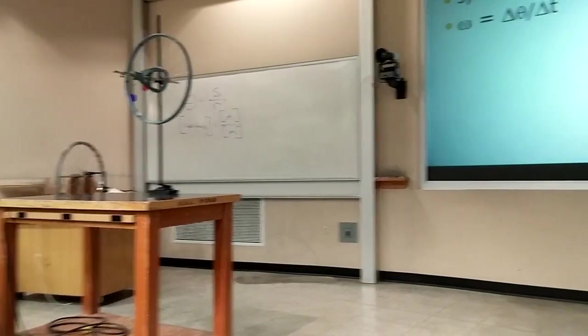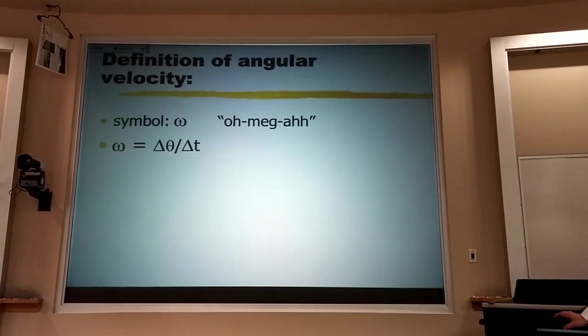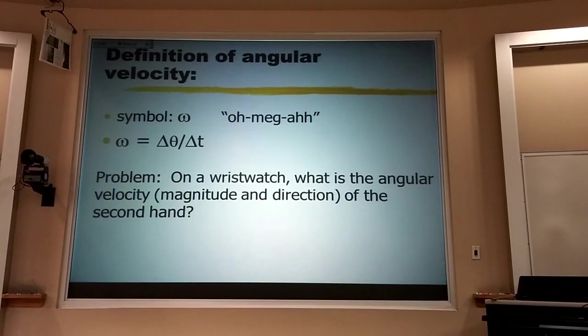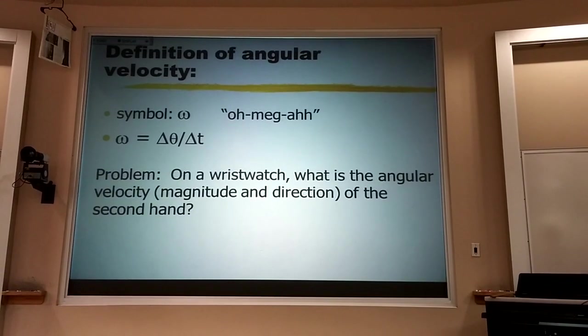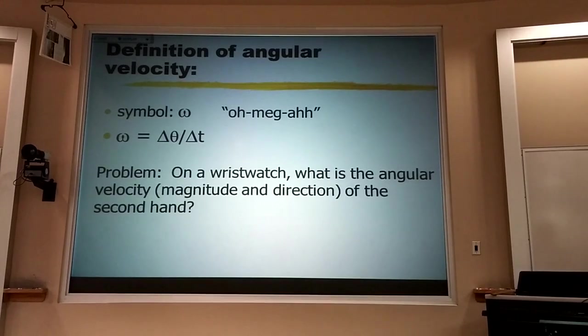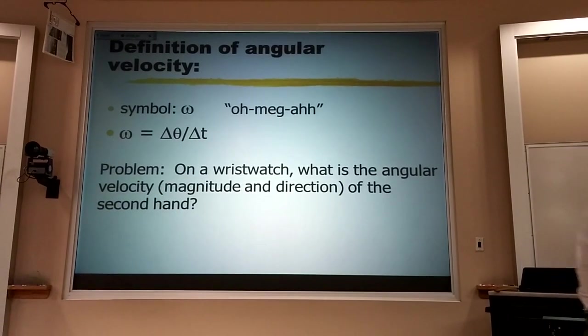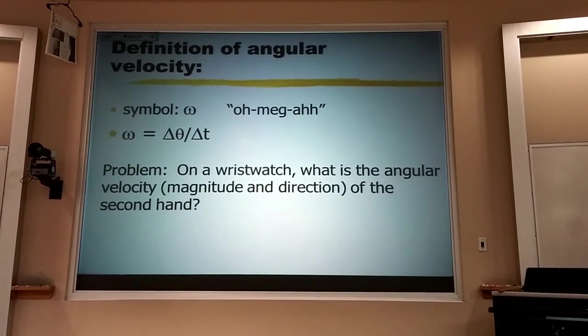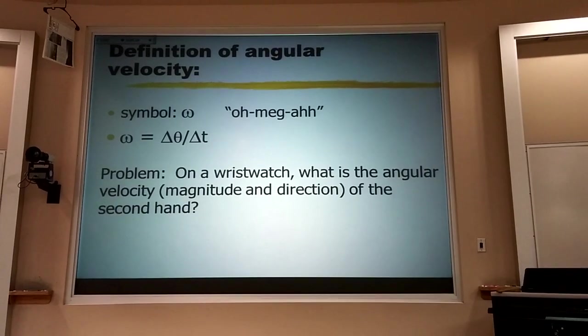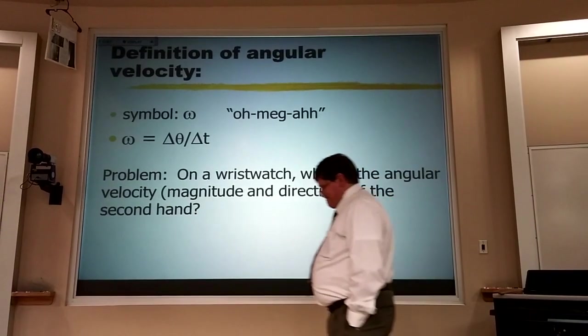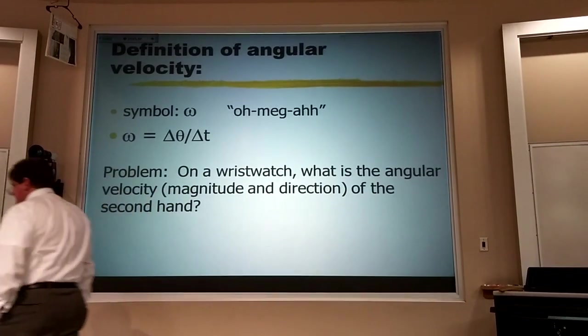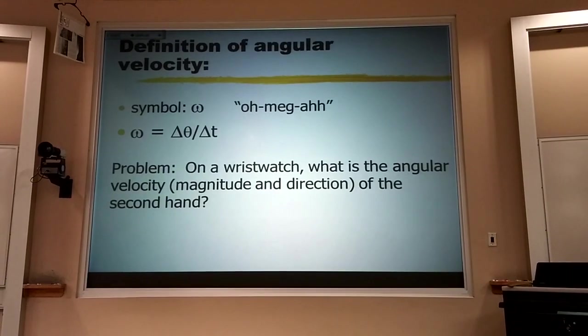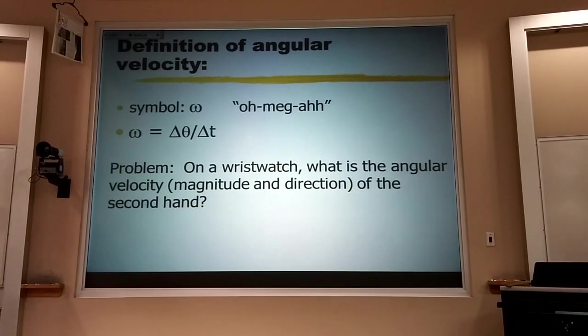Now, this is the type of question that you have for homework. All three of your problems are, well, actually they're the same problem, just dressed up differently. They really are. On a wrist watch, one of the old style ones with a second hand, what is the angular velocity, magnitude, and direction of the second hand? Talk to Nimrod. See if Nimrod can solve this problem.